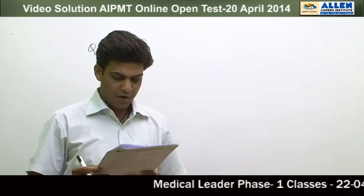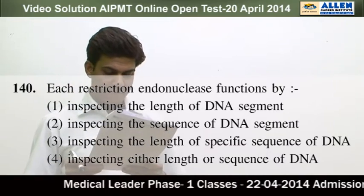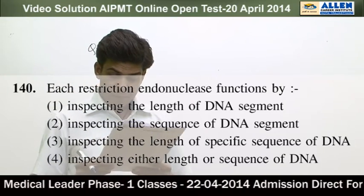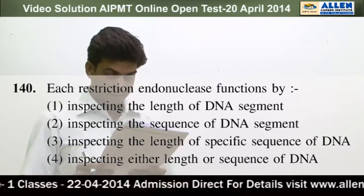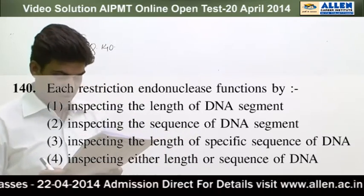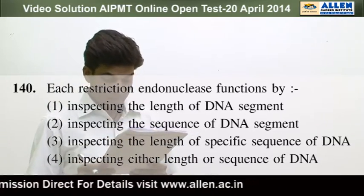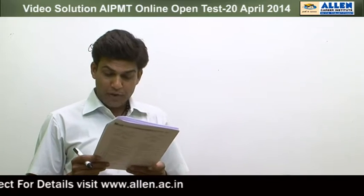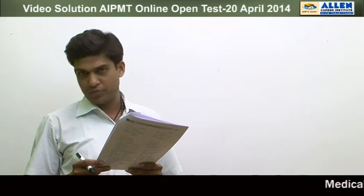Question No. 140: Each restriction endonuclease enzyme functions by — options given are: inspecting the length of DNA segment, inspecting the sequence of DNA segment, inspecting the length of specific sequence of DNA, and the fourth one, inspecting either length or sequence of the DNA.